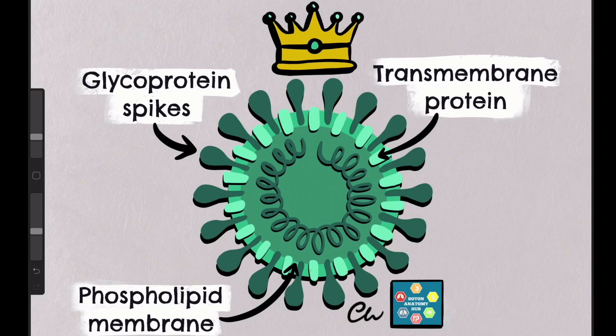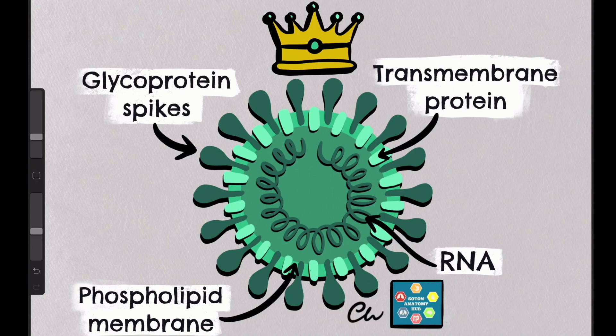A helical capsid is contained within the viral membrane, inside which the virus stores its genetic material, a positive strand RNA.